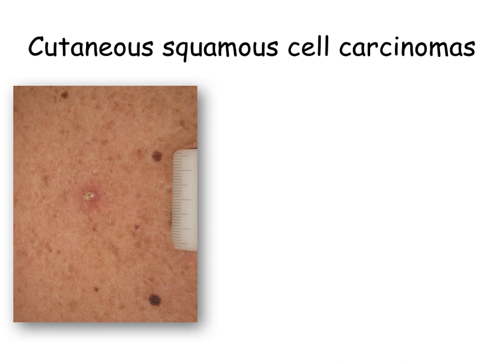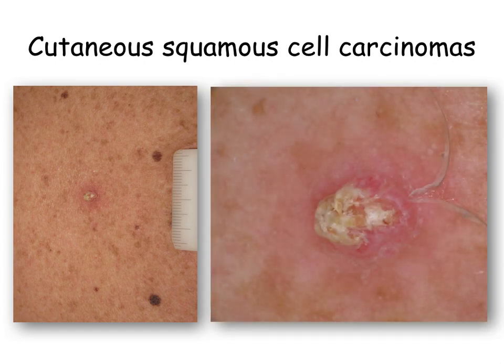This is a typical example of a small squamous cell carcinoma arising in a patient receiving Vemurafenib. Dermoscopy is extremely useful in the early recognition of these lesions, since it highlights the typical criteria for morphology and the hairpin vessels at the periphery of the lesion.